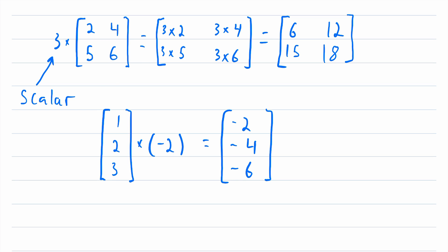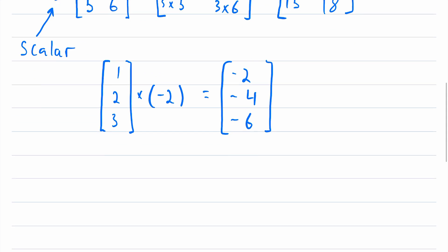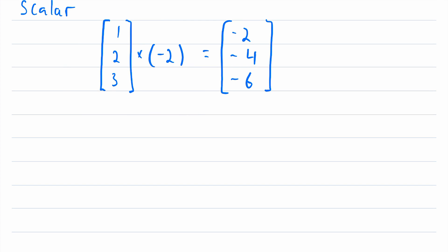So when we're dealing with real numbers, scalar multiplication is commutative, just like normal multiplication, where we can change the order that we're doing the multiplication in, and it doesn't matter. So if for this example, we had written negative two, multiplied by that same matrix with entries one, two, and three, we would get the same exact result.